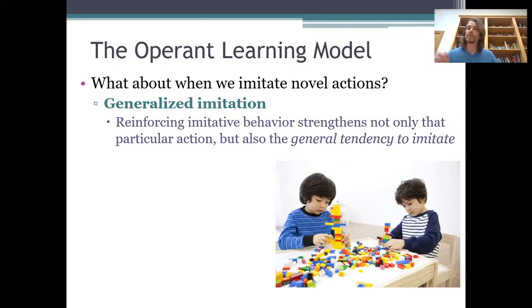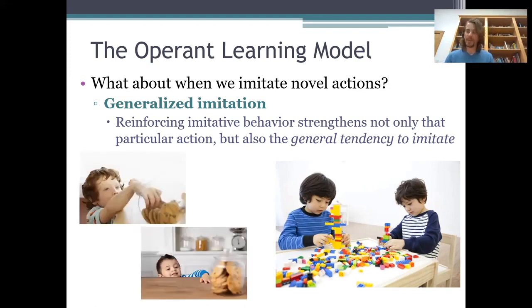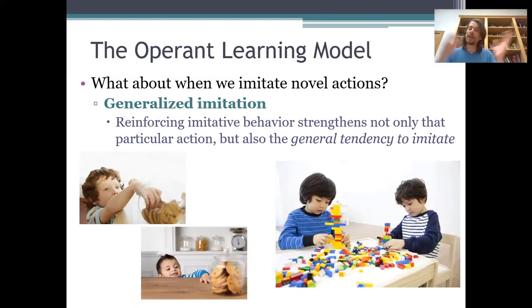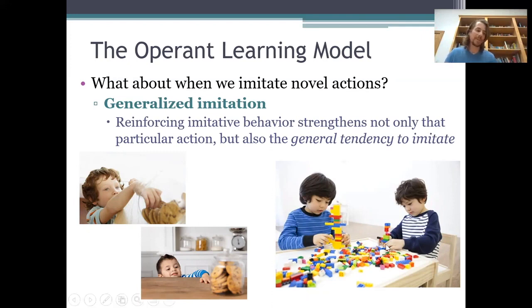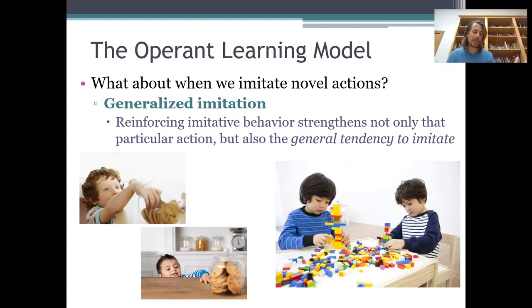For example, if this kid has been reinforced for imitating other behaviors by his brother in the past — say he sees his older brother fetch a cookie from the kitchen and then gets reinforced with a cookie for repeating that same behavior — then he might learn not only how to get cookies from the kitchen, but also more generally that doing as his brother does tends to result in good reinforcing consequences. So he might acquire a general tendency to imitate the things he sees his brother do, which is why he imitates the Lego-building behavior too, even though he's never been reinforced for imitating that specific behavior before.